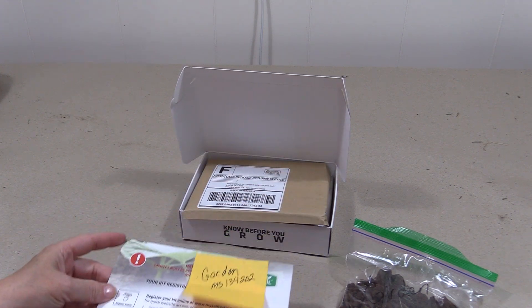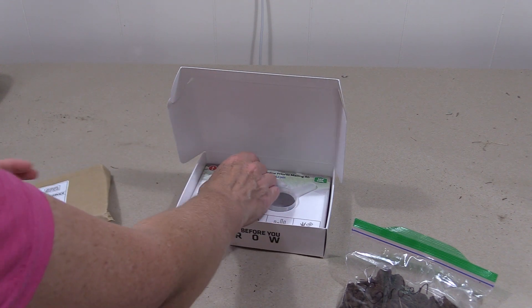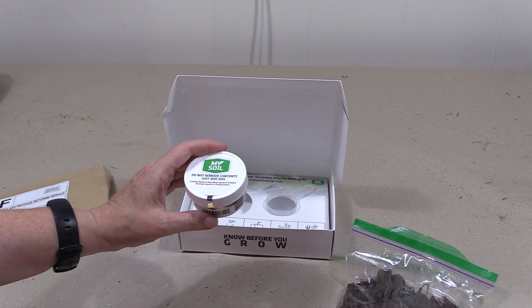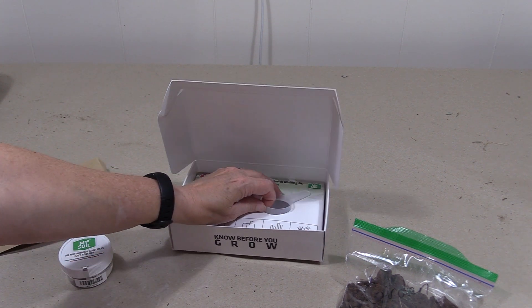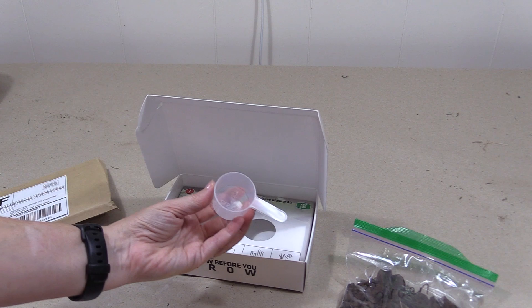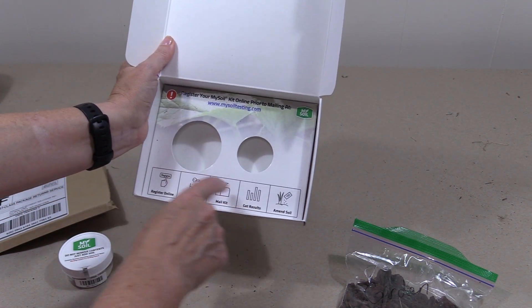So I've registered my kit. Let me show you what else is in here. It comes with a prepaid envelope, jar of liquid, and a scoop. You also have the instructions here.